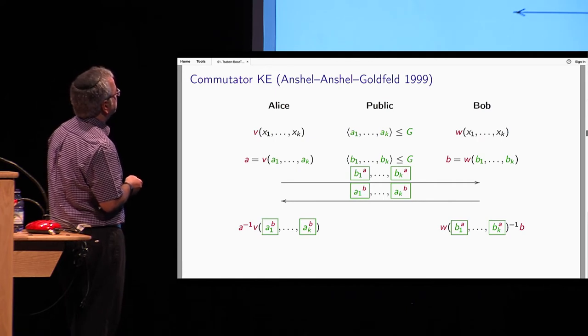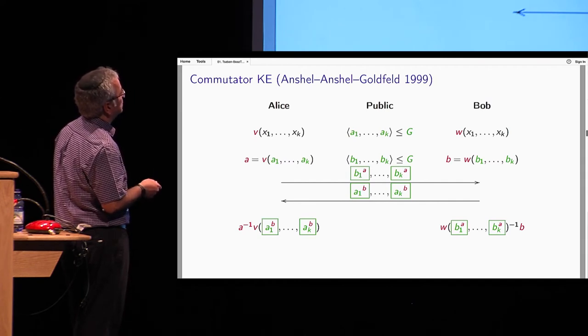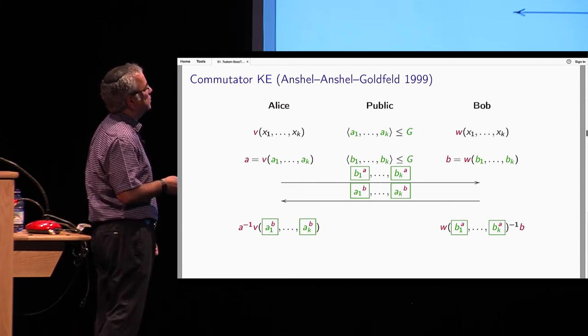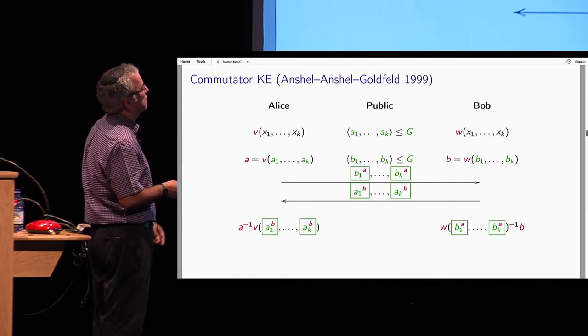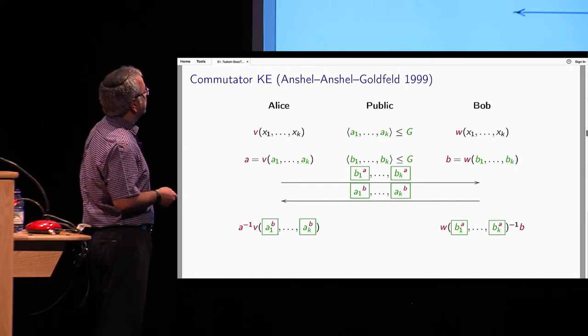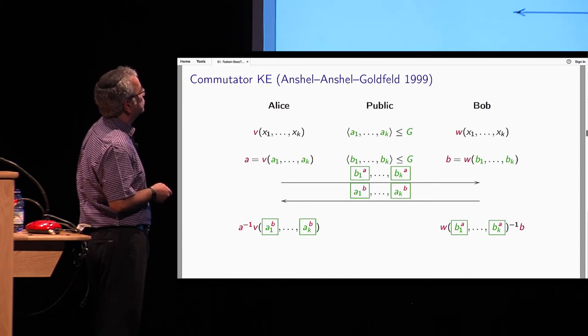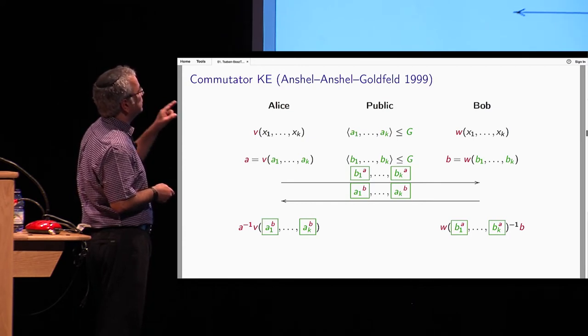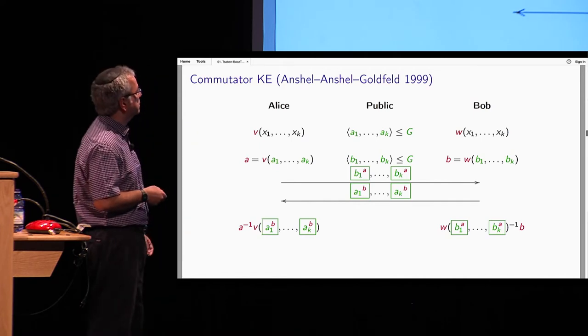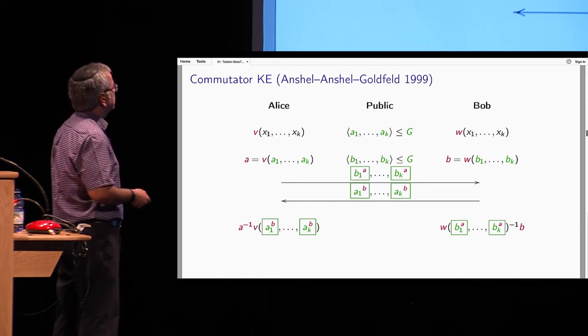And there is some non-abelian group, and there are some subgroups of these groups generated each by some elements. Everything here is public. Now what Alice does, she takes her word in the variables and plugs in the generators, a1 to ak, and she gets an element in this generated group. Just an element in this group. Let's call it a. Bob does the same. He plugs in these public elements and gets b. So because the words are not known, the resulting elements are also secret. They are known only to Alice and Bob respectively. Now what do they send in the air? So Alice sends the generators for this group conjugated by the secret element.